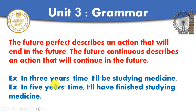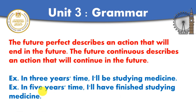In three years' time, I'll be studying medicine — I'll continue studying, I'm not finishing it. In five years' time, I'll have finished studying medicine — by the end of five years, I'll be finished, I'm not going to study anymore. In the first example, in three years, I'll still be studying. Hope you got the difference between the future perfect and the future continuous.